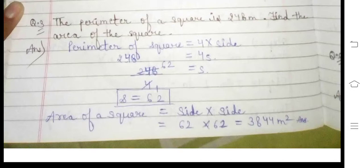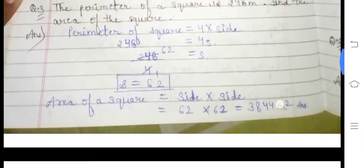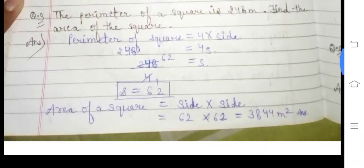The perimeter of the square is given, so we find the side: side = 248 ÷ 4 = 62 meters. Then area of square = side × side = 62 × 62 = 3844 meter square.